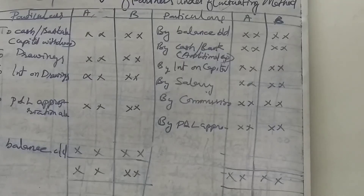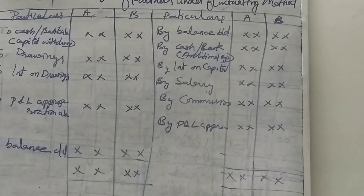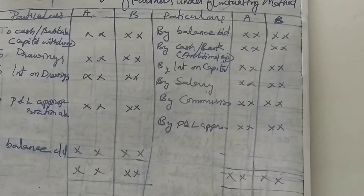Good morning to all of you. Today we can learn about how to prepare capital account under fluctuating method. Yesterday we saw there are two methods to prepare partners' capital account. First one is fixed method and yesterday we finished the sums. Today we can see how to prepare the partners' capital account based on fluctuating method.